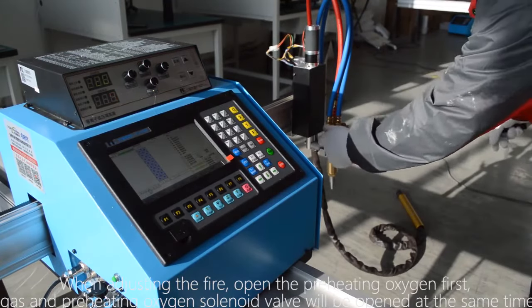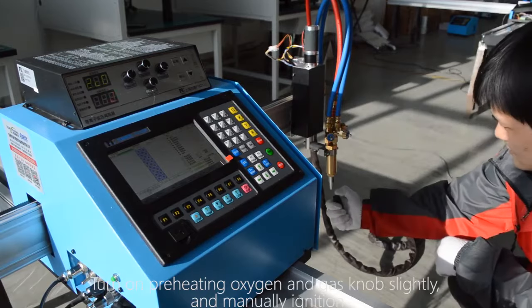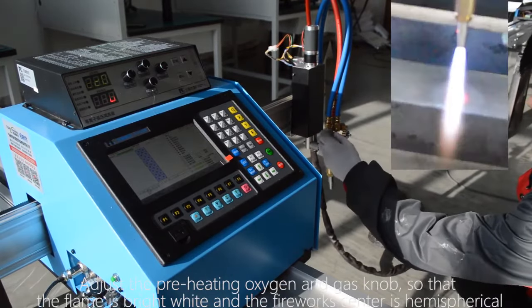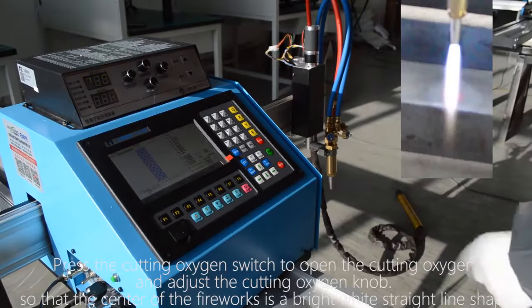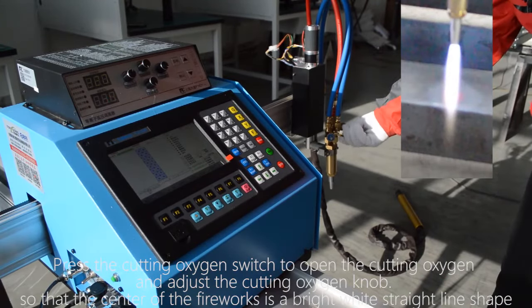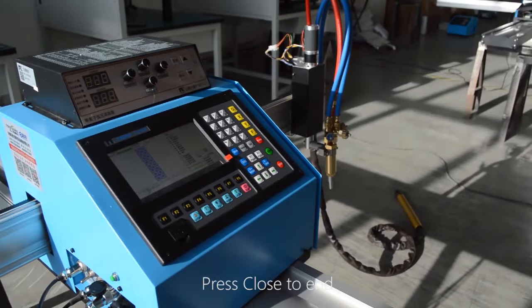When adjusting the fire, open the preheating oxygen first. Gas and preheating oxygen solenoid valve will be opened at the same time. Adjust the preheating oxygen and gas knob so that the flame is bright white and the fireworks center is hemispherical. Press the cutting oxygen switch to open the cutting oxygen and adjust the cutting oxygen knob. Press close to end.